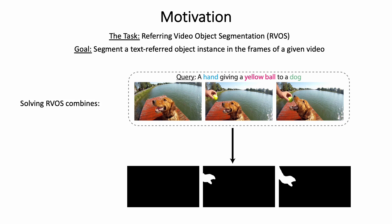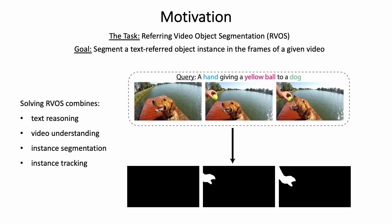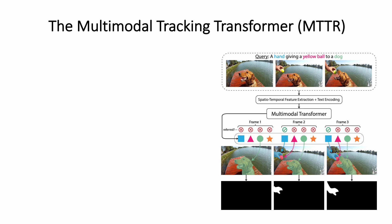Due to the complex nature of this multimodal task, which combines text reasoning, video understanding, instance segmentation, and tracking, existing approaches typically rely on sophisticated pipelines in order to tackle it. In contrast, here we propose a simple end-to-end transformer-based approach to RVOS, which significantly outperforms existing RVOS approaches. We call our method the Multimodal Tracking Transformer, or MTTR.